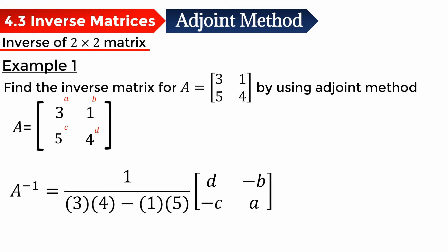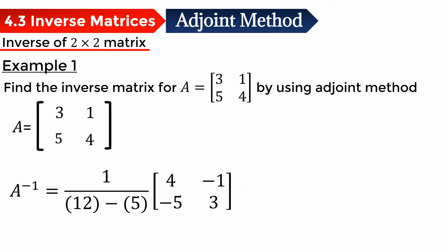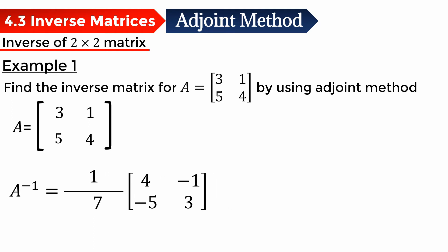For elements A and D, we need to switch their places. So 4 switches place with 3. And for elements B and C, we change the signs. Since B is 1 and C is 5, we change them to negative 1 and negative 5. Then we calculate the determinant: 3 times 4 is 12, 1 times 5 is 5, so 12 minus 5 is 7. So we have 1 over 7 here.